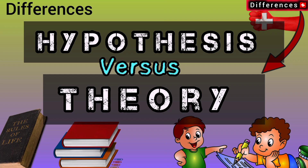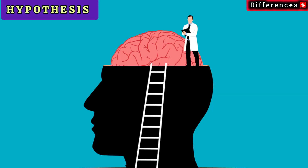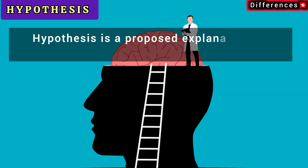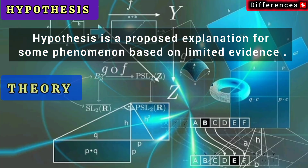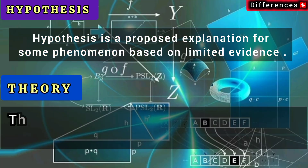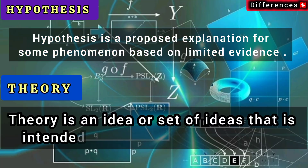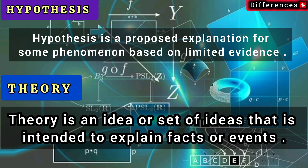In this video we will explain the difference between hypothesis versus theory. A hypothesis is a proposed explanation for some phenomenon based on limited evidence. A theory is an idea or set of ideas that is intended to explain facts or events.